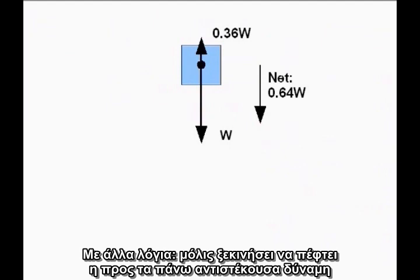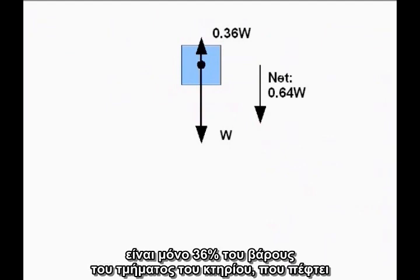In other words, once it starts falling, the upward resistive force is only 36 percent of the weight of the falling section of the building.